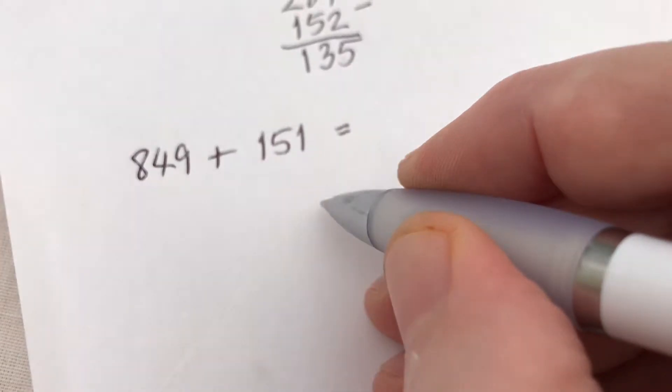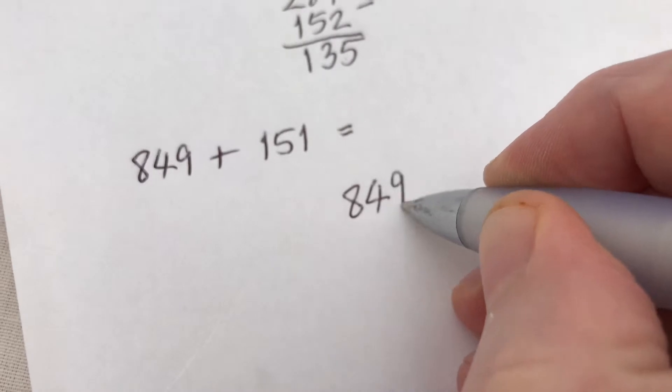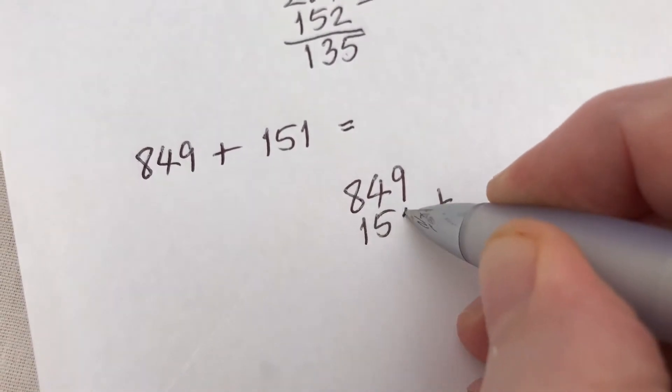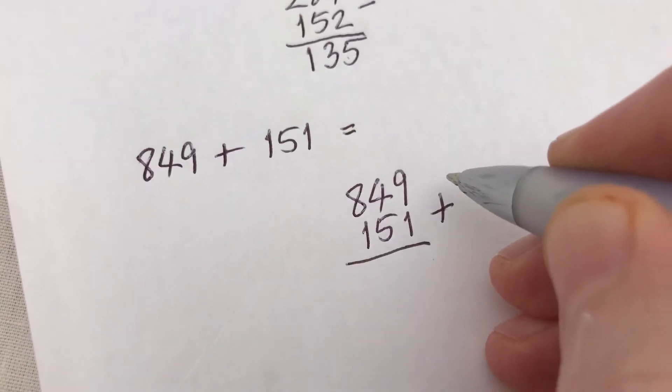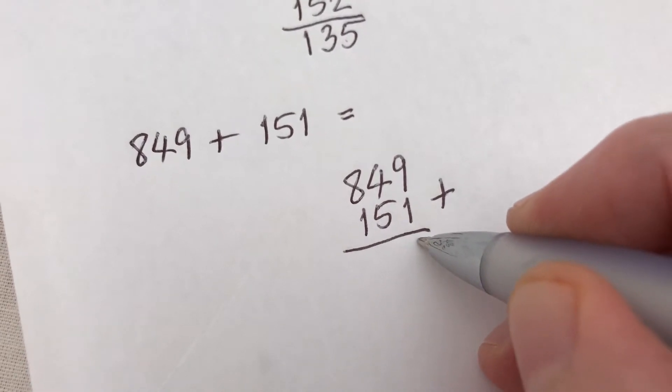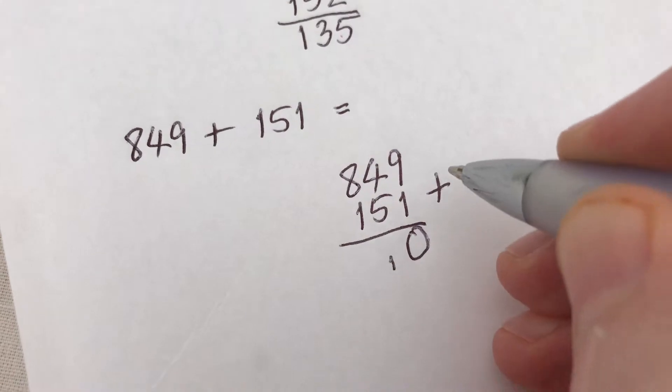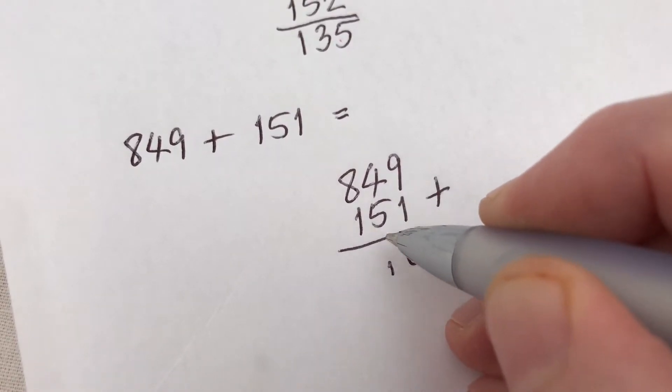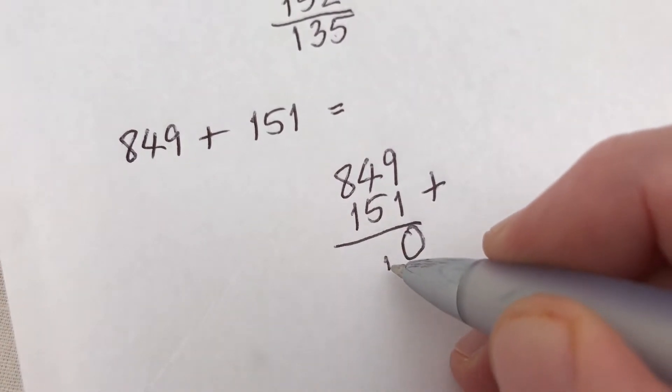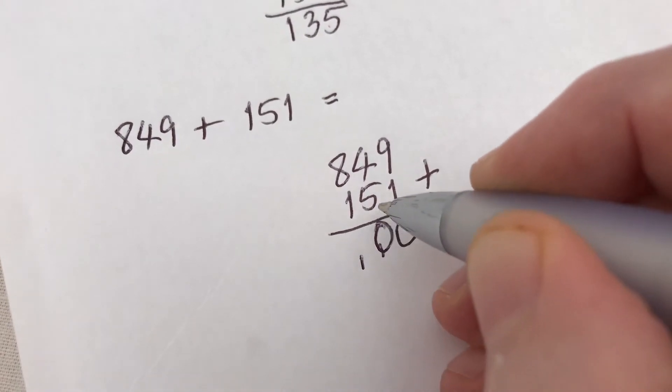Now we move on to slightly different, but we set it out and lay things out in exactly the same way. So 849 plus 151, again making sure the units are within the units. 9 plus 1 is 10, so we put down a 0 and we carry the 1 into the next set of units. So it's the tens units. 5 plus 4 is 9, plus the 1 that we carried over is 10. So we put down the 0, carry the 1.